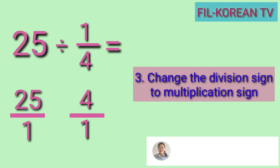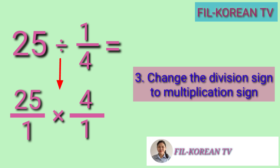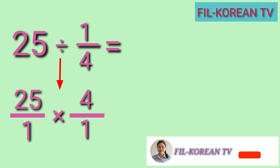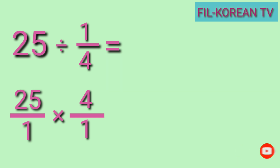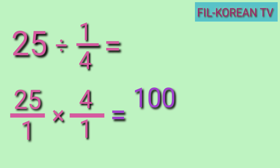Third step: change the division sign to a multiplication sign. Then multiply the numerators and multiply also the denominators. 25 times 4 equals 100. Multiply also the denominators: 1 times 1 equals 1. So the answer is 100 over 1.